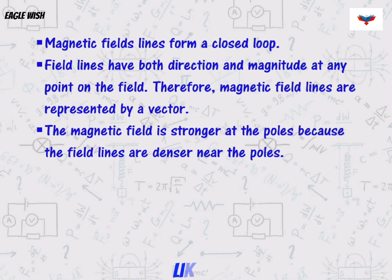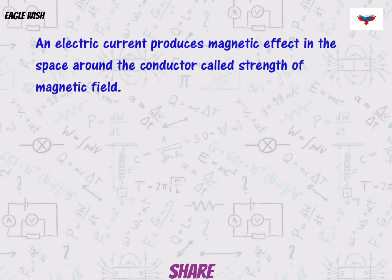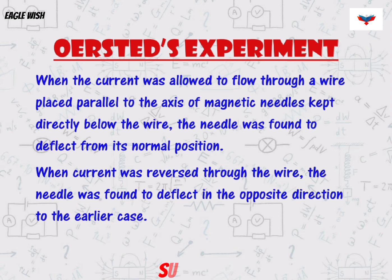After introducing magnetic field, we will mention about the magnetic effect of current. Dutch scientist Hans Christian Orsted discovered the relation between electricity and magnetism by conducting an experiment, which is later known as Orsted's experiment.